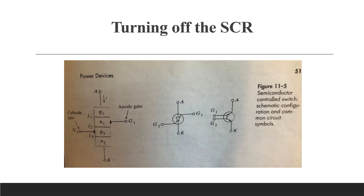In some SCR devices, gate turn-off can be used to reduce the alpha sum below unity. For example, if the gate voltage is reversed, holes are extracted from the P2 base region. If the rate of hole extraction by the gate is sufficient to remove the NPN transistor from saturation, the device turns off.